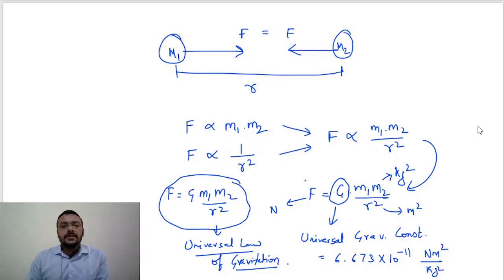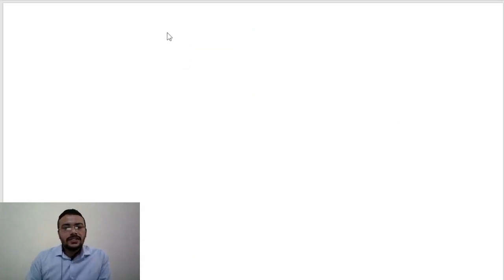Now you must be wondering, if both the bodies are experiencing the same force, then why is the ball going down to earth? Why is it not that the earth is coming up to the ball? So its answer lies in the second law of motion.